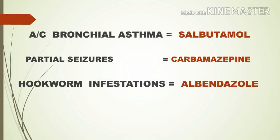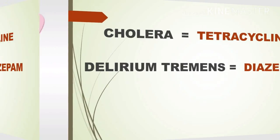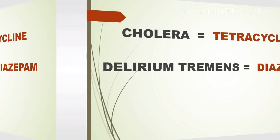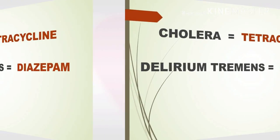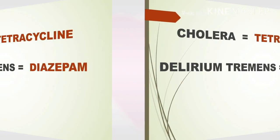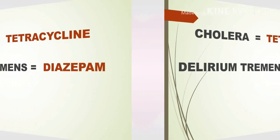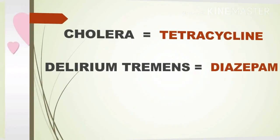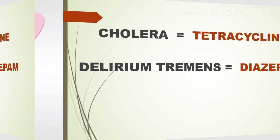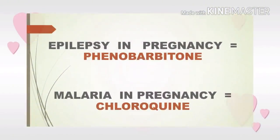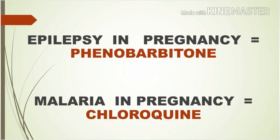The next drug of choice for nursing exams is tetracycline, which is the drug of choice for cholera. In case of delirium tremens, diazepam is the first drug of choice — diazepam is a sedative-hypnotic of the benzodiazepine group. Phenobarbitone, a sedative-hypnotic of the barbiturates group, is the drug of choice for epilepsy in pregnancy.